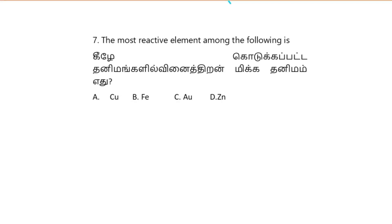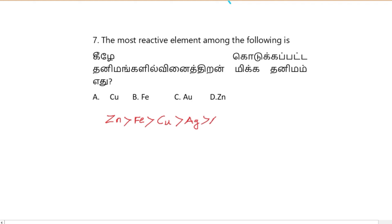We have discussed the reactivity order of D-block elements in the reactivity series: Zinc is more reactive than Iron, Iron is more reactive than Copper, Copper is more reactive than Silver, which is more reactive than Gold. Here we can see that as we move down the group, reactivity does not increase — it actually decreases.